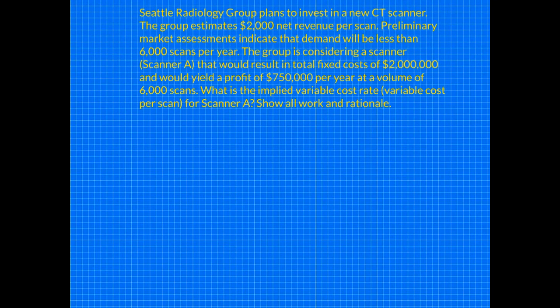Here's our first problem. The Seattle Radiology Group plans to invest in a new CT scanner. The group estimates $2,000 net revenue per scan. Preliminary market assessments indicate that demand will be less than 6,000 scans per year. The group is considering a scanner — we'll call it Scanner A — that would result in total fixed costs of $2,000,000 and would yield a profit of $750,000 per year at that volume of 6,000 scans. What is the implied variable cost per scan for Scanner A?